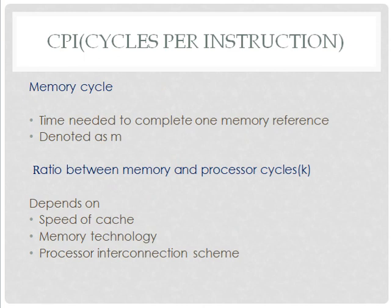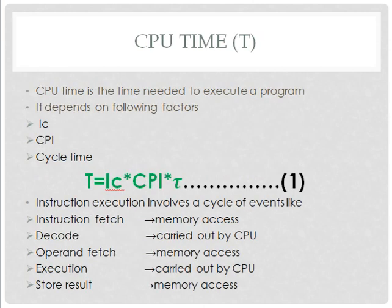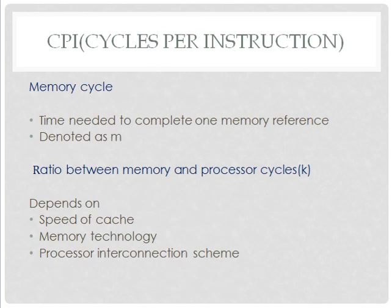What is meant by memory cycle? It is the time needed to complete one memory reference, denoted as M. The instruction execution involves a cycle of events; in these events, instruction fetch, operand fetch, and store result use memory access. The ratio between the memory and processor cycle, denoted as K, depends on the speed of cache memory, the memory technology used for execution, and the processor interconnection scheme.